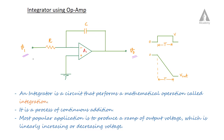So this is similar to the inverting amplifier circuit, but the only difference is instead of a resistor, here we have the capacitor. That is the only difference.